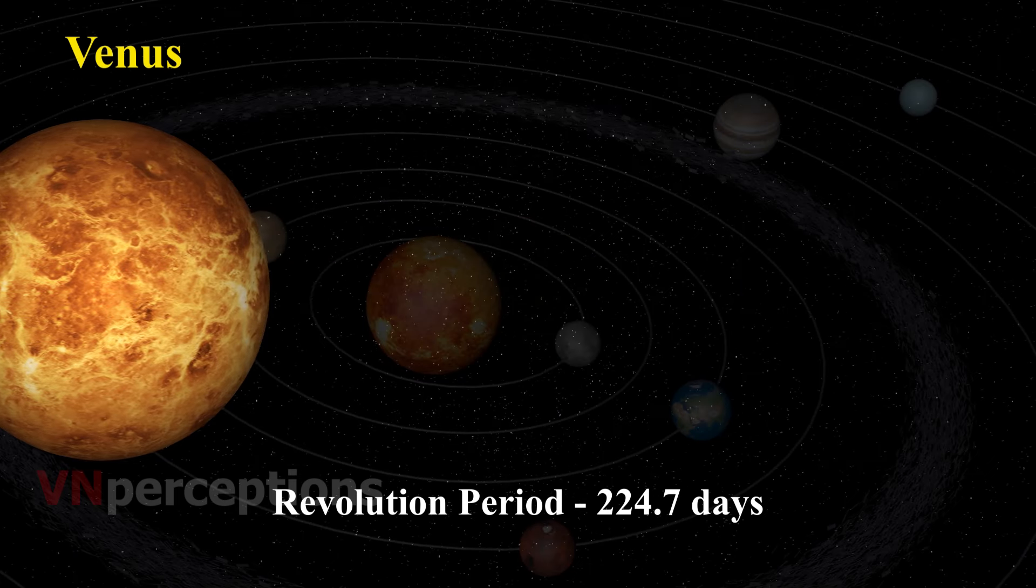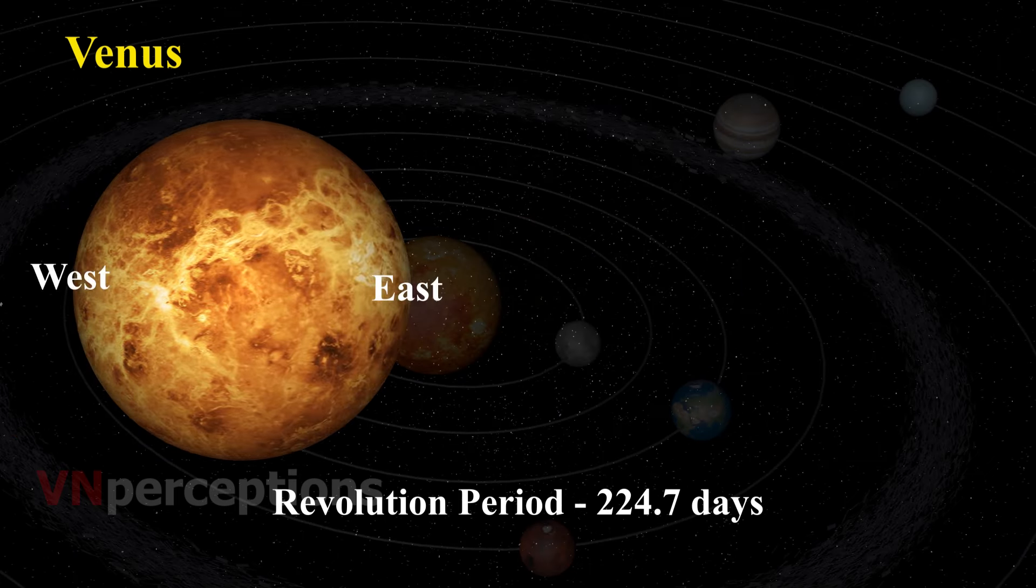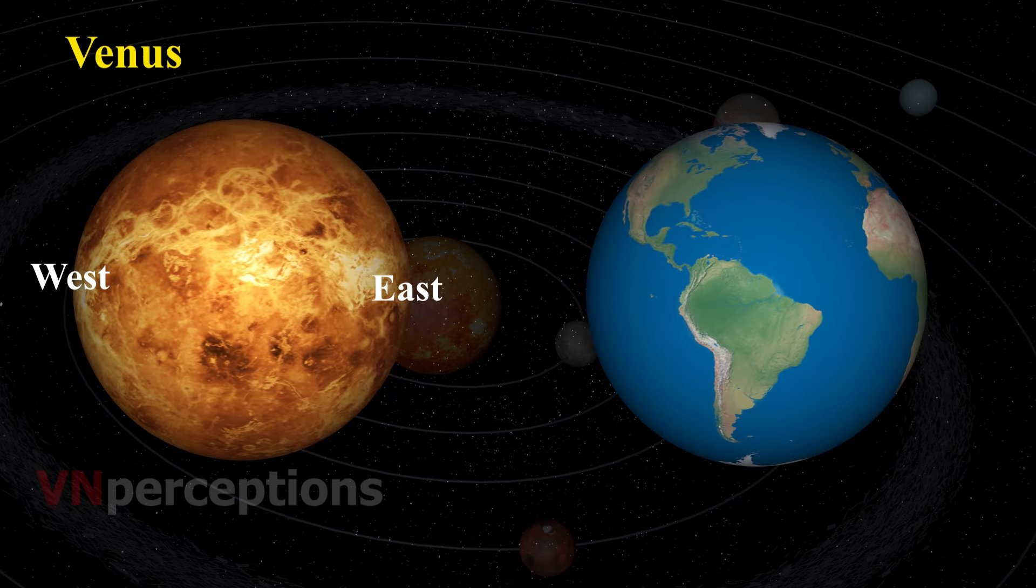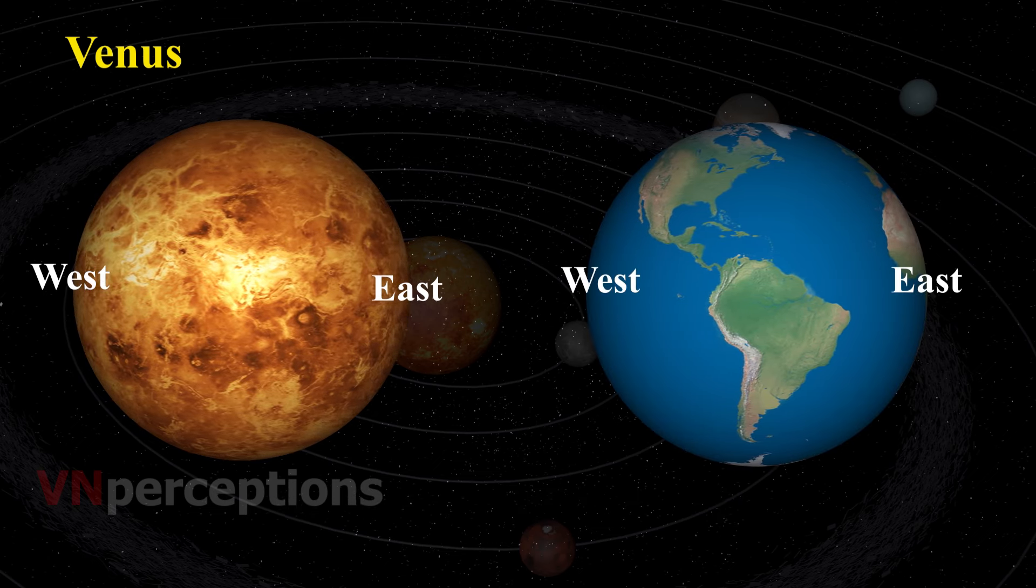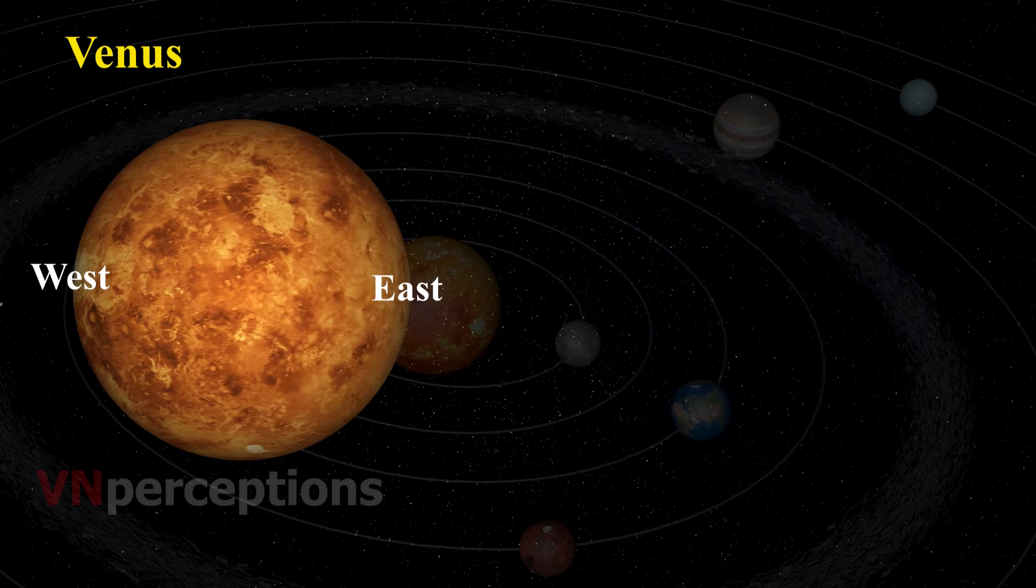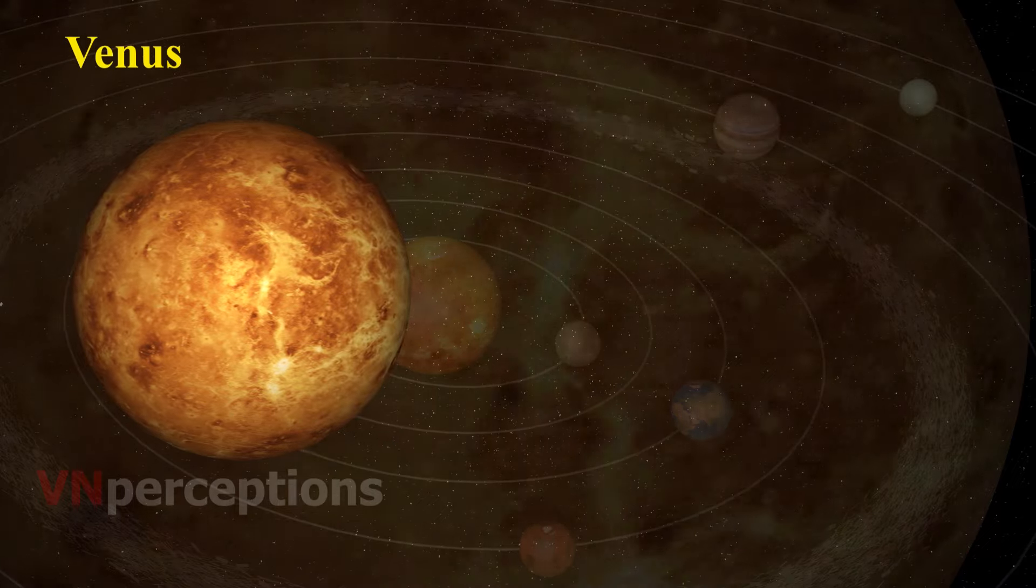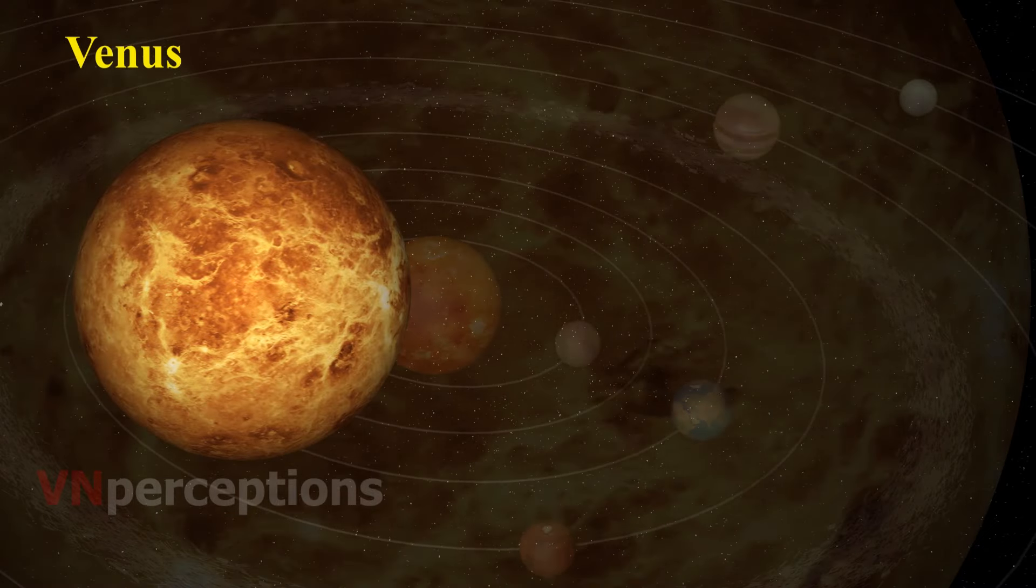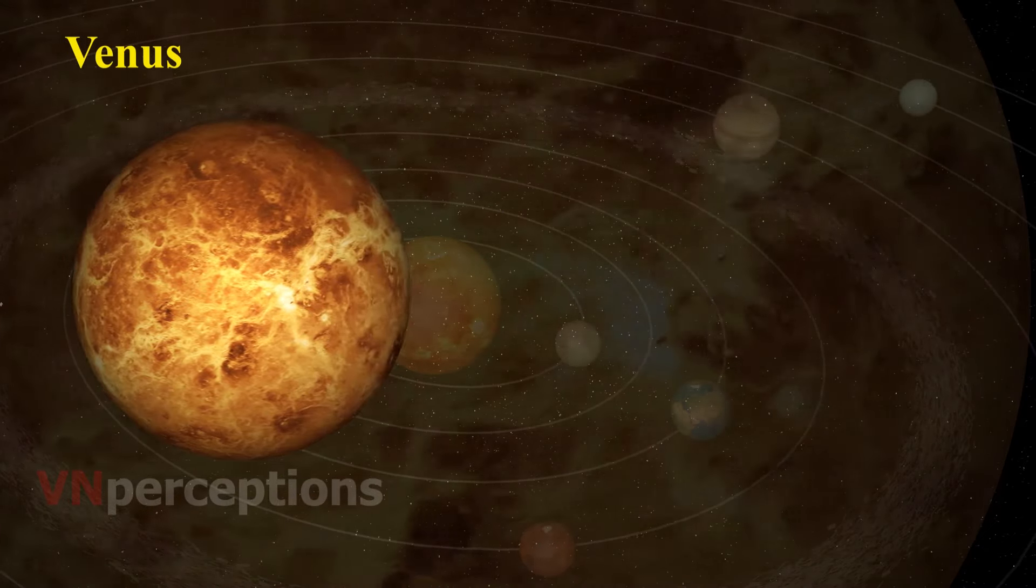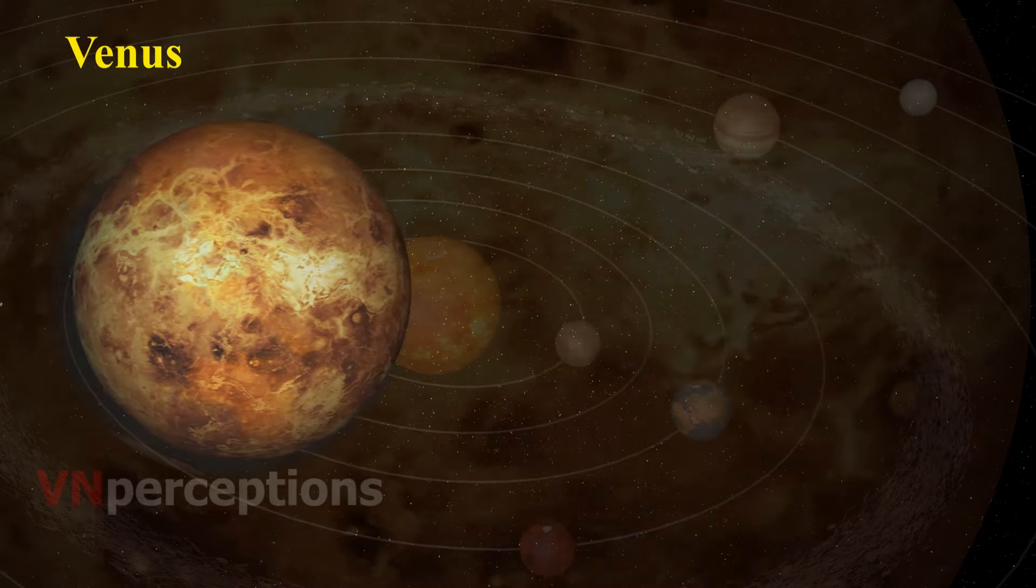Rotation of Venus on its axis is somewhat unusual. It rotates from east to west while the Earth rotates from west to east. Venus isn't the closest planet to the sun. It is still the hottest. The reason behind that is it has a thick atmosphere full of the greenhouse gas carbon dioxide and clouds.